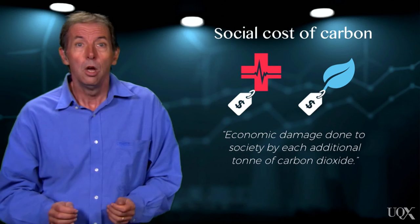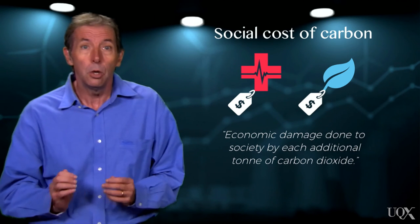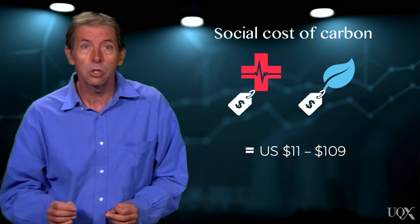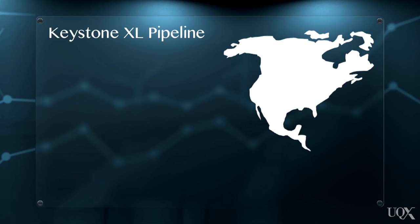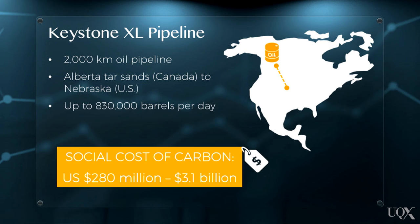So how much is this in dollar terms? Well, depending on the expert you talk to, the computer model and the discount rate used, the social cost of carbon varies widely. The US government puts the social cost of carbon at between 11 and 109 US dollars per tonne of carbon dioxide emitted. The social cost of carbon is being increasingly used in public policy. The US and UK governments have in recent years integrated it into their economic decision making process for large infrastructure projects. A controversial and important example is the Keystone XL pipeline — a proposed 2,000 kilometre pipeline to expand the transport of oil from the Canadian tar sands region in Alberta to the US state of Nebraska. According to researchers, if the pipeline were to go ahead, the social cost of carbon of the project would be between 280 million and 3.1 billion US dollars per year.